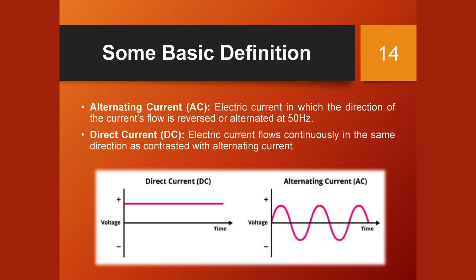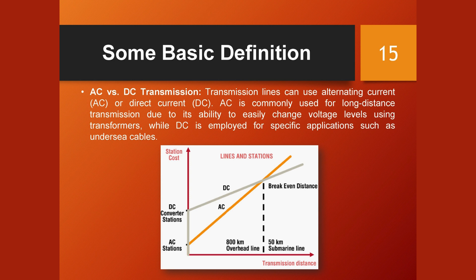Alternating current (AC) is electric current in which the direction of the current's flow is reversed or alternated at 50 Hz. Direct current (DC) flows continuously in the same direction, as contrasted with alternating current. Transmission lines can use AC or DC. AC is commonly used for long-distance transmission due to its ability to easily change voltage levels using transformers, while DC is employed for specific applications such as undersea cables.